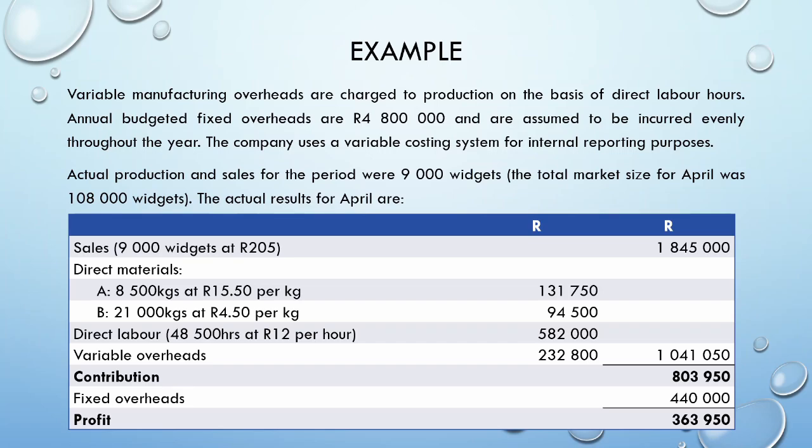The example then continues to tell us that actual production and sales for the period were 9,000 widgets, and the total market size for April was in fact 108,000 widgets. We are then provided with the actual results for April.